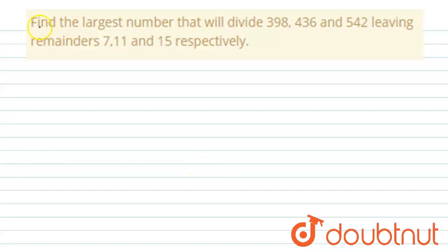The question says find the largest number that will divide 398, 436, and 542 leaving remainders 7, 11, and 15 respectively.